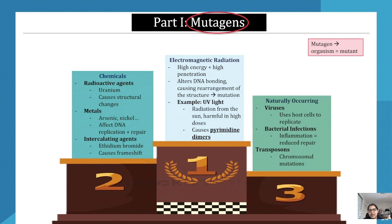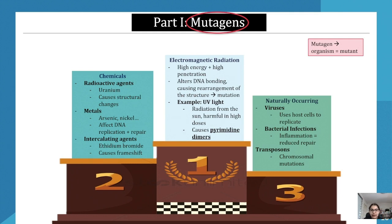There are also electromagnetic radiations — those are among the most prominent ones. They are high energy and highly penetrative. They alter DNA bonding, which causes rearrangement of the structure, and because of the processes occurring in the DNA, they can have a huge impact on the genome and as a result cause mutations. An example of an electromagnetic radiation mutagen is UV light.